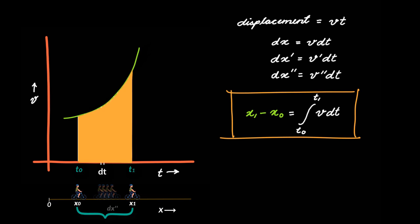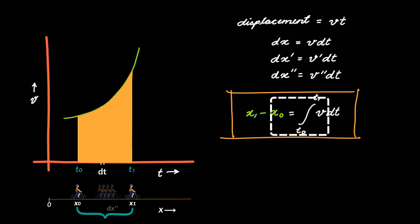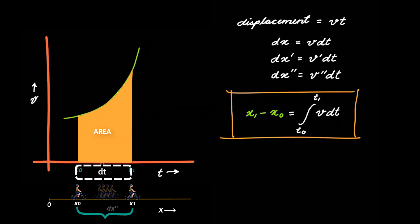What this equation is saying — and please hear it carefully — is that if you can find the right-hand side of the equation, then the value you find is the value of this area, that is the displacement of the object between time t naught and t1.